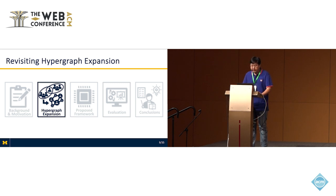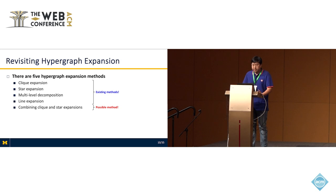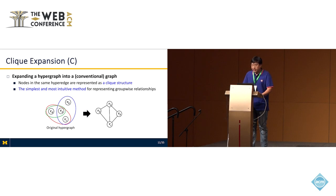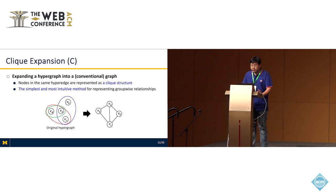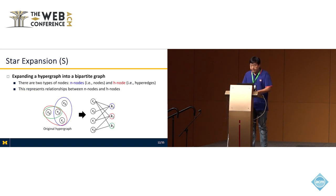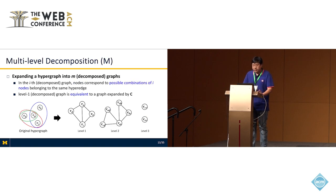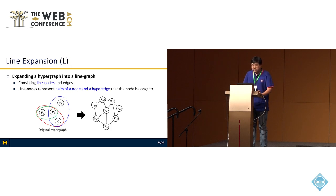Let me briefly introduce the hypergraph expansion methods. There are about five methods — four existing ones and one possible method. Clique expansion expands a hypergraph into a graph where nodes in the same hyperedge are represented as a clique structure, the simplest and most intuitive method. Star expansion expands a hypergraph into a bipartite graph representing relationships between nodes and hyperedges. Multi-level decomposition expands a hypergraph into m decomposed graphs. Line expansion expands a hypergraph into a line graph, where each line node represents a pair of a node and a hyperedge that the node belongs to.